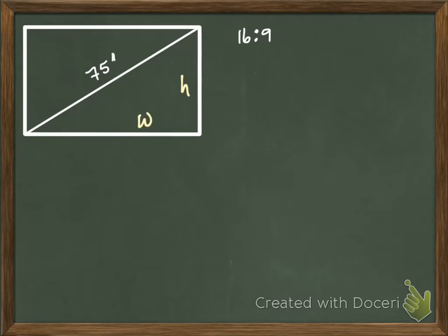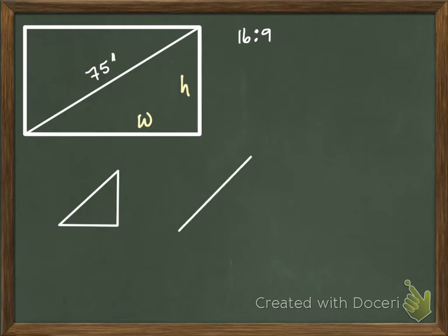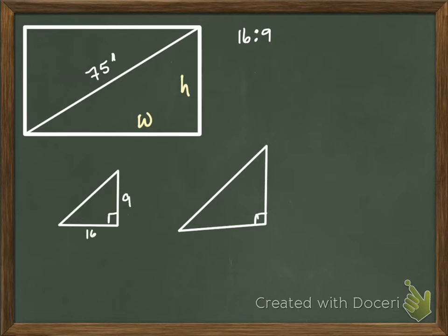I'm going to set up my triangles. So I have my one triangle that's my 16 by 9 triangle. I have my other triangle that's a similar triangle, but it's just bigger. Pretend those are the same shape. So this is 16, this is 9. This I don't know. This is 75. These I don't know, but those I want to know.